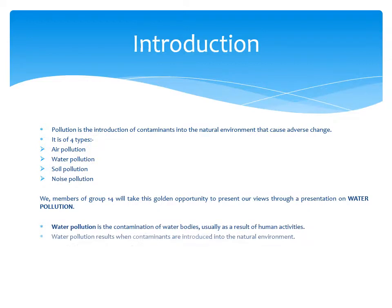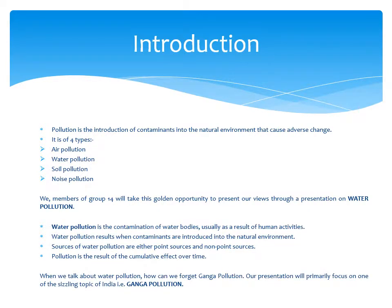Pollution is the introduction of contaminants into the natural environment that cause adverse change. It is of four types: first, air pollution; second, water pollution; third, soil pollution; fourth, noise pollution. We will totally focus upon water pollution. Water pollution is the contamination of water bodies, usually as a result of human activities. Sources of water pollution are either point sources or non-point sources. When you talk about water pollution, how can you forget Ganga pollution? Our presentation will primarily focus on this seasoning topic of India — Ganga pollution.